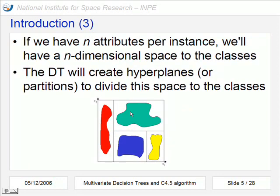If we have n attributes, in this case we have two attributes, we will have an n-dimensional space, in this case two-dimensional, where the classes can be. And the decision tree will create hyperplanes or partitions that are these lines here to divide the space to the classes.